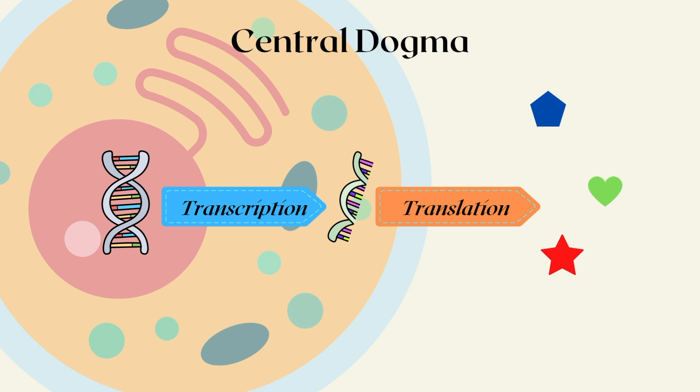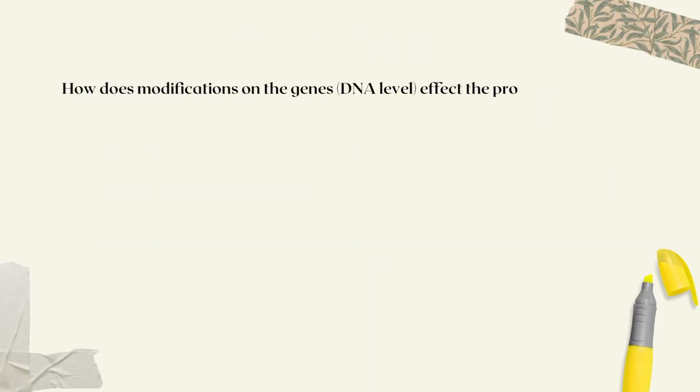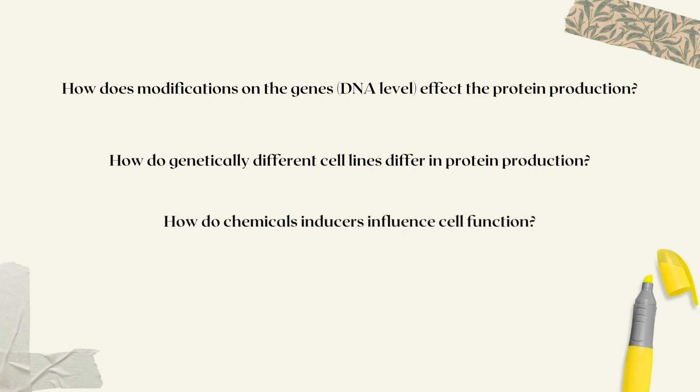The main questions researchers are trying to answer when using Western blots are: how does the modifications on the gene change the protein production, how do genetically different cell lines differ in protein production, and how do chemical inducers influence cell function. All in saying cell proteins are the best indicators of the cell's function and growth.